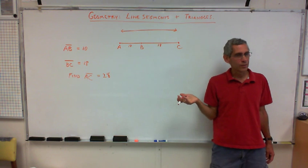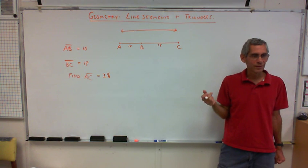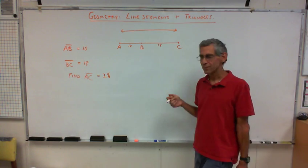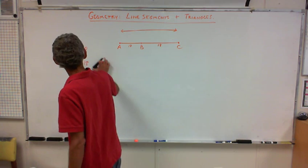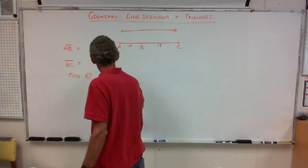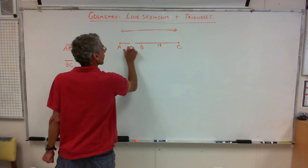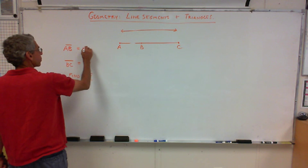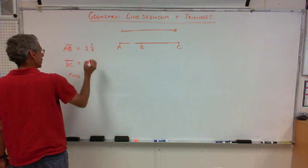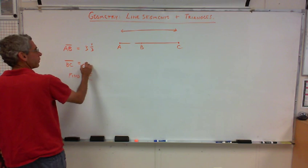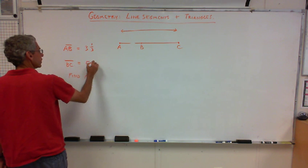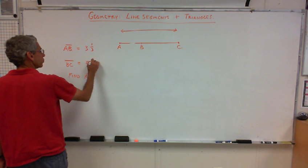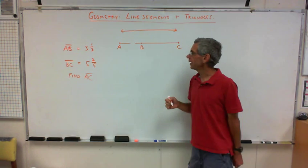Now, I was really nice to you. That's not how they usually give them to you. They usually give them to you with mixed numbers, right? So, now we're going to do it again, but this time we're going to do it with mixed numbers. So, AB is, in this case, we'll say three and a third, and BC is, I don't know, five and a fifth. Now, we'll say two fifths, why not make it different. Five and two fifths, find AC.